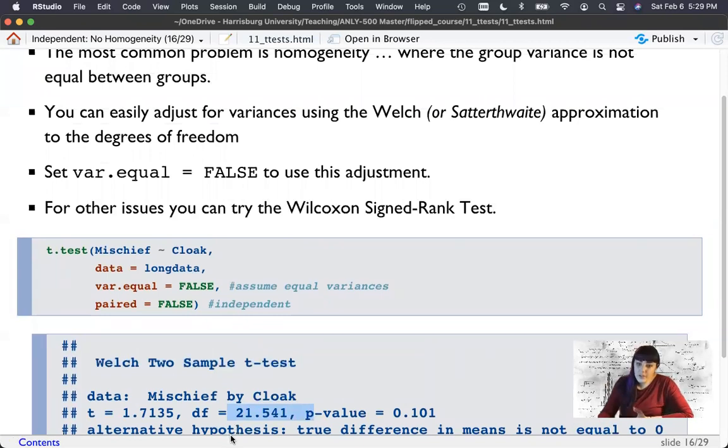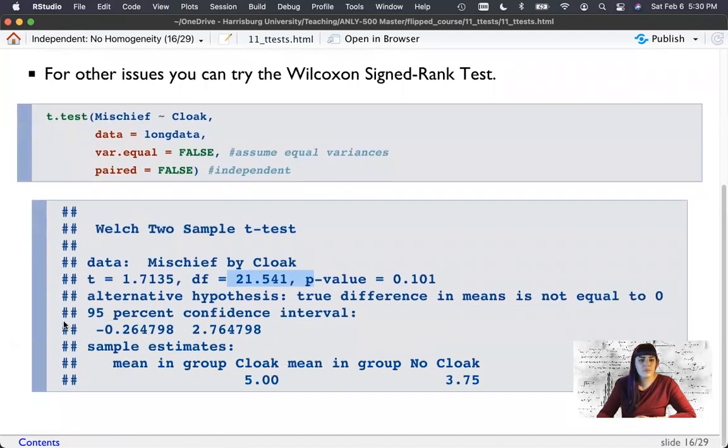And so if you have other issues like normality, you can use the Wilcoxon signed rank test, which is the non-parametric version. It does not assume the DV is continuous or normal. But again, we'll see that it's very similar. So our homogeneity is probably fine because the correction here is very small. It tells me the same answer.